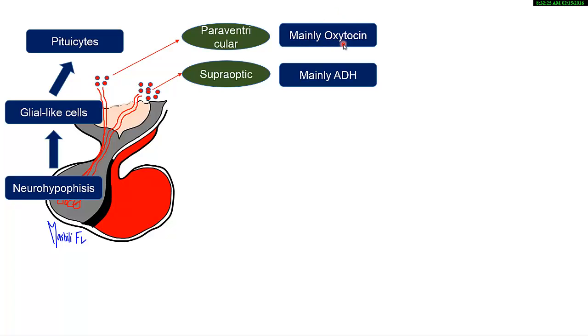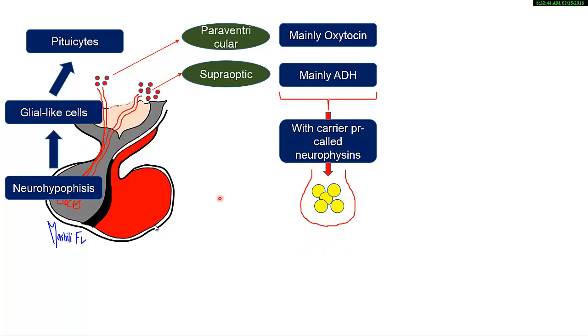We know that they are synthesized in these nuclei and they're carried down axons. They're usually carried with carrier proteins, and these carrier proteins are known as neurophysins. They go down to the posterior pituitary. We know that these hormones are peptides, and peptides can be stored in secretory vesicles.